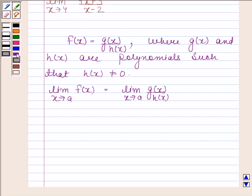At the algebra of limits, limit of quotient of two functions is the quotient of the limits of the functions. That means limit of g(x)/h(x) as x tends to a is equal to limit of g(x) as x tends to a upon limit of h(x) as x tends to a.